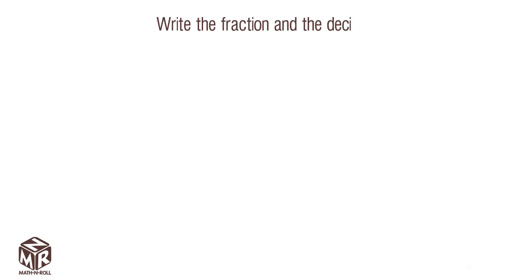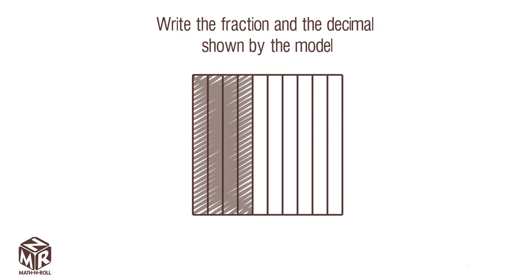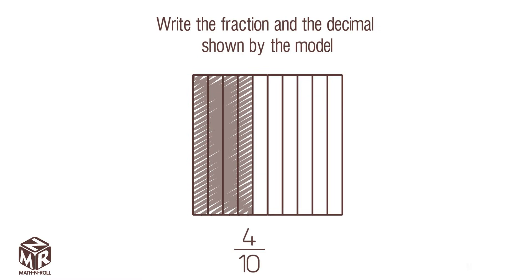Write the fraction and the decimal shown by the model. We have a model consisting of 10 parts. Each part represents 1 tenth. 4 out of 10 tenths are shaded, so we write the fraction as 4 over 10, or 4 tenths. The decimal is also 0.4.